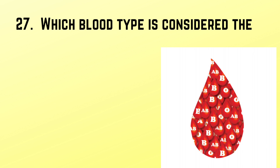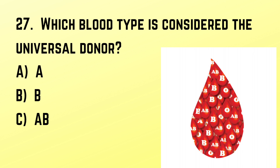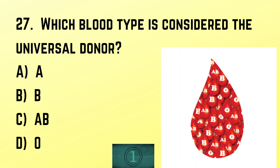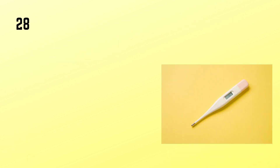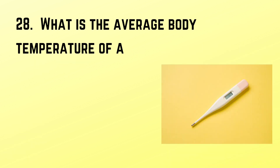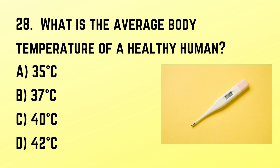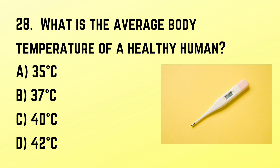Question number 27: Which blood type is considered the universal donor? Correct answer: D. O. Question number 28: What is the average body temperature of a healthy human? Correct answer: B. 37 degrees Celsius.